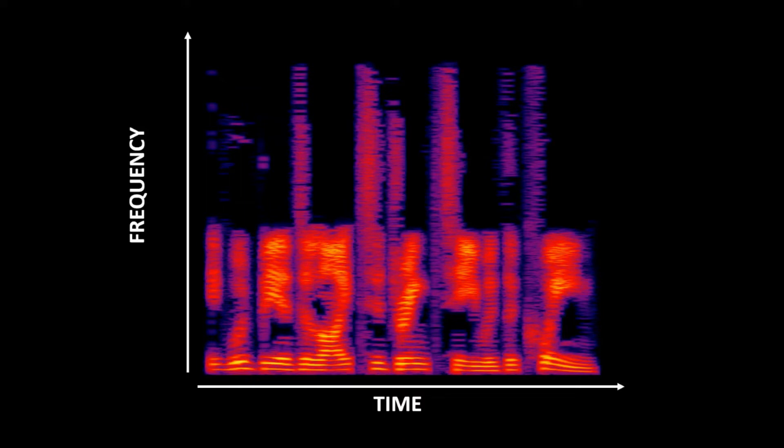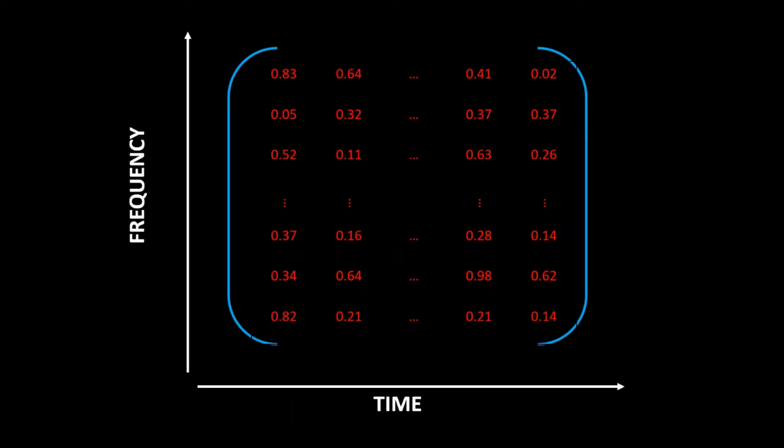Hence, as far as any model is concerned, a spectrogram is just a two-dimensional image which we can represent as a grid of numbers. It is an important step to decide the quantization along both the time and frequency axes such that the original audio signal can be reconstructed reasonably.